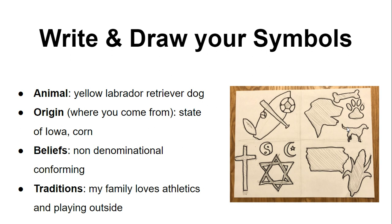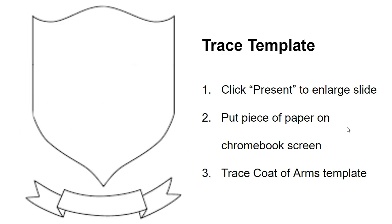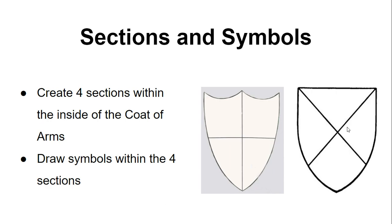To review, you should have already drawn an animal, origin, belief, and tradition as sketches, and now you're referencing those to put them on your final coat of arms template or your crest. You can use the internet browser as a resource to choose a crest and draw it on a piece of final project paper.